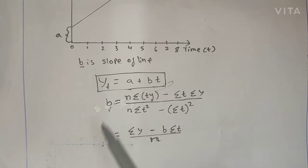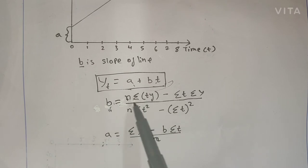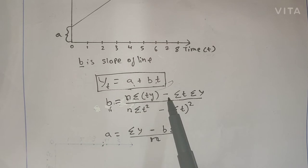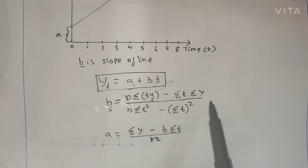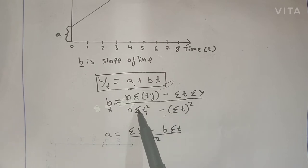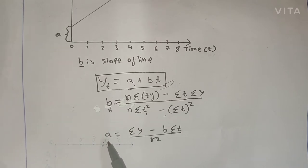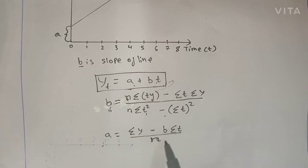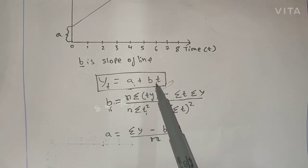To get the equation we need to find a and b. The formula for b is: b = [n * Σ(t·y) - Σt * Σy] / [n * Σ(t²) - (Σt)²]. And the formula for a is: a = [Σy - b * Σt] / n. Once you find these values, substitute a and b into the equation at the required time period to get the demand.